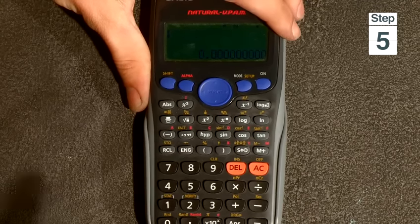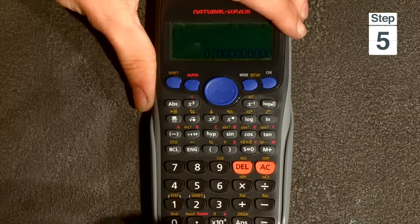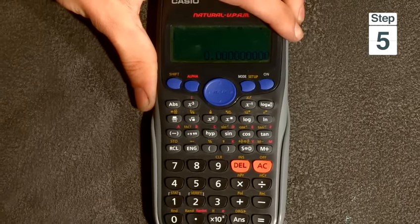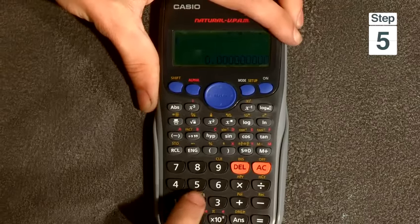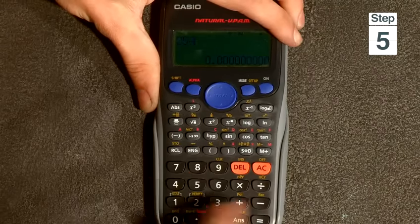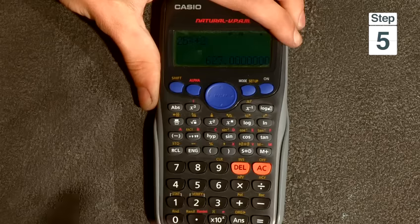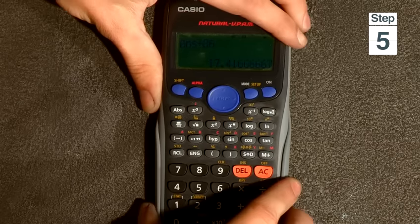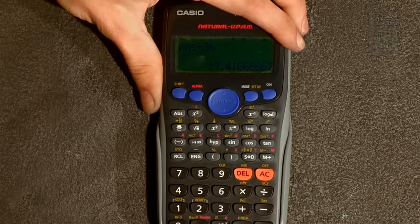If I was to do something more complicated, like 25 squared plus 2, all divided by 36, I would do 25 squared plus 2 equals that. Then answer divided by 36 will give you 17.41.